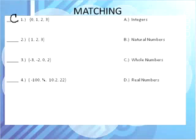For number 2, we have the numbers 1, 2, 3. And those are the natural numbers. Natural numbers are in the set of whole numbers. They just don't contain 0 in their set.